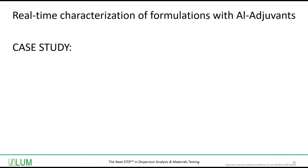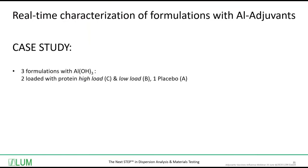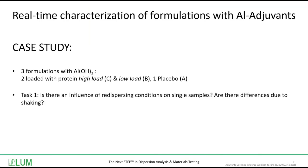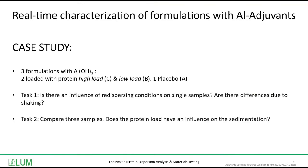This case study is about the real-time characterization of formulations with aluminum adjuvants. We have three formulations with aluminum hydroxide: two were loaded with a protein — it was not disclosed which kind of protein. One was characterized as a high load, sample C; another was characterized as a low load, sample B; and there was a sample called the placebo, sample A. The first task was to assess whether redispersing conditions influence a single sample, and whether there are differences due to shaking. The second task was to compare the three samples and determine whether protein load has an influence on sedimentation behavior.